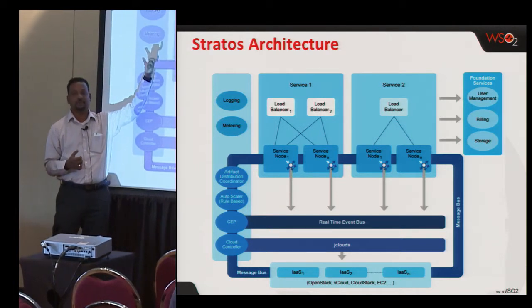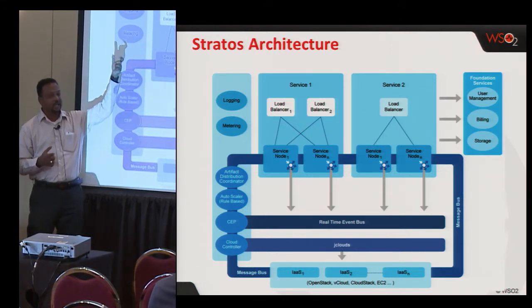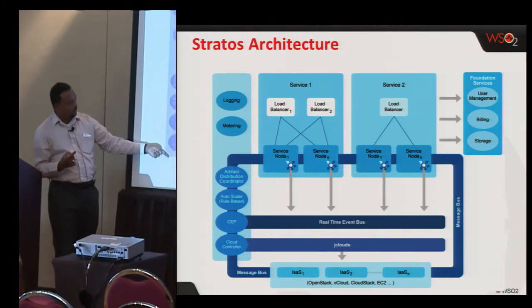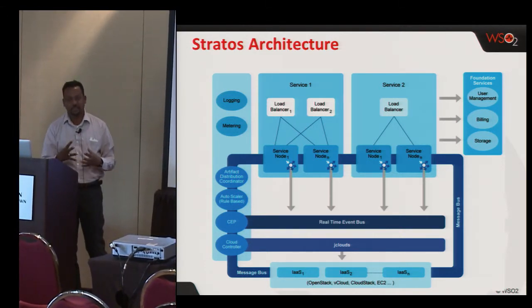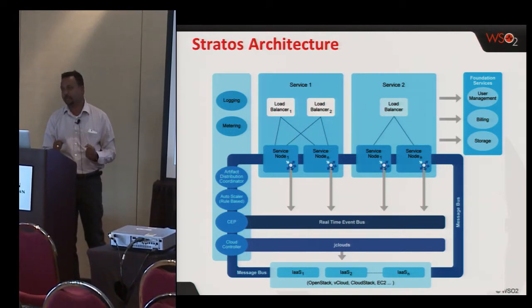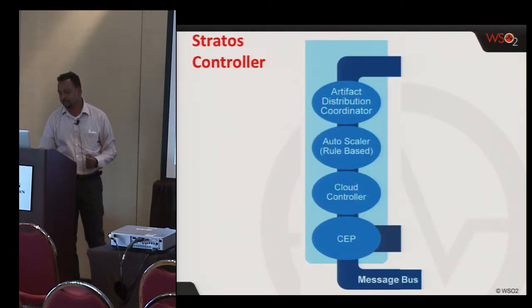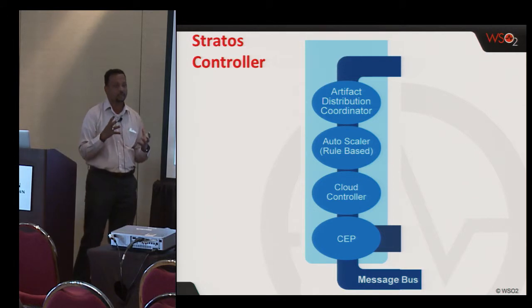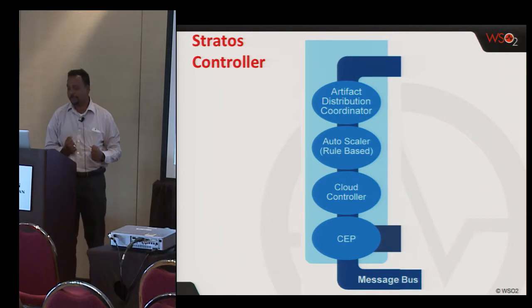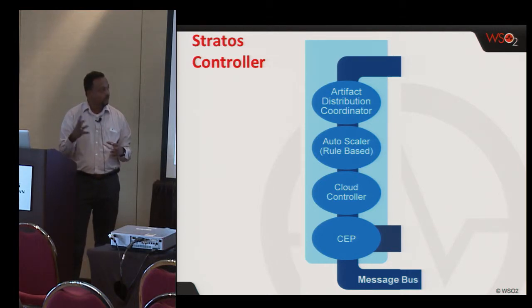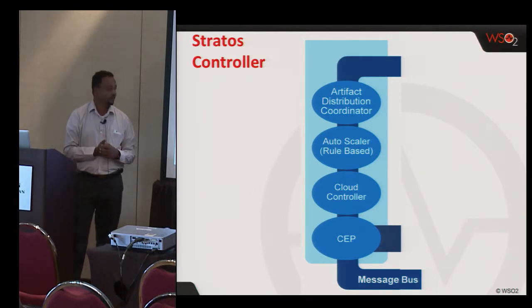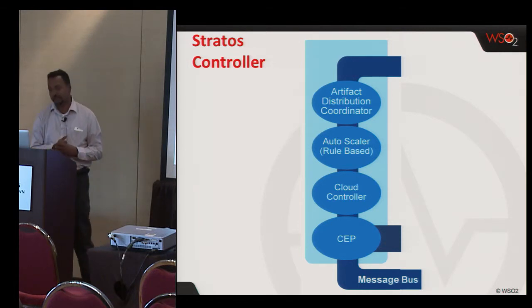The platform as a service has various components. It can have multiple services — for example, databases, application servers, et cetera — and each service can have its own load balancer. One of the key aspects of this architecture is that all components are connected using a message bus. This brings in decoupling between components, with loose coupling so that you can easily manage the architecture, bring in new IaaS layers, and bring in new services. On the left-hand side, we have the Stratos controller, which manages artifact distribution into various services. It has a rule-based autoscaler, a cloud controller, and a complex event processing engine — all connected into a unified message bus.